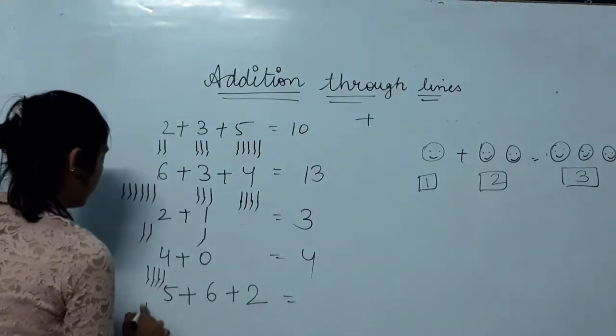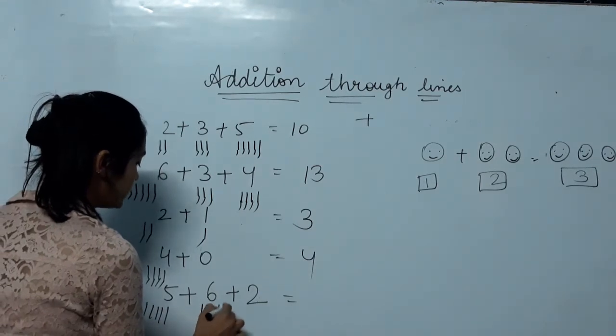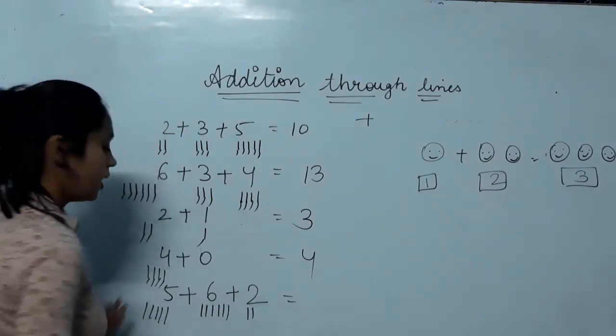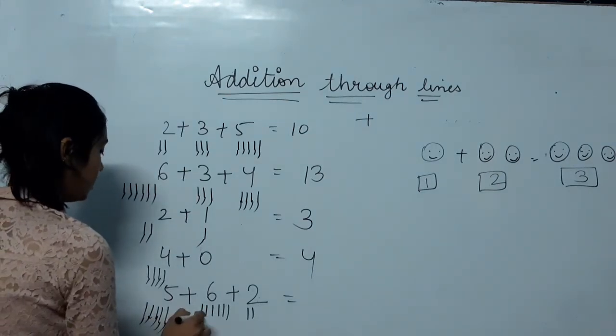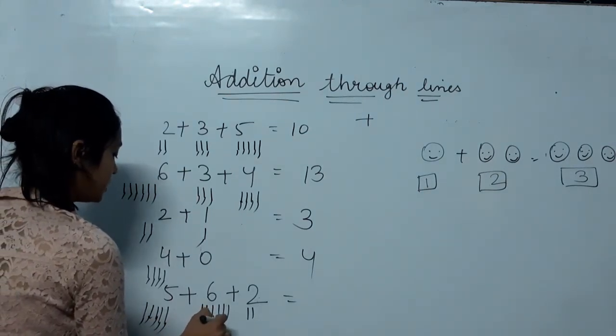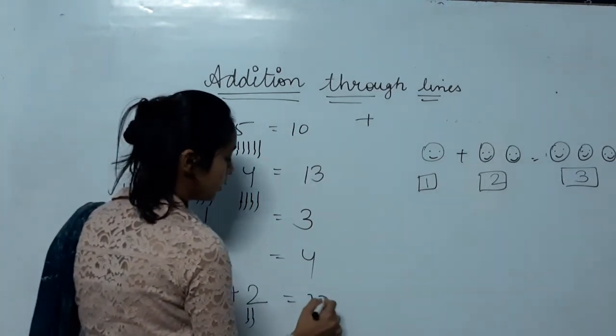Five. One, two, three, four, five. One, two, three, four, five, six. One, two. Now what do you do? You add them. One, two, three, four, five, six, seven, eight, nine, ten, eleven, twelve, thirteen. So the answer will be thirteen.